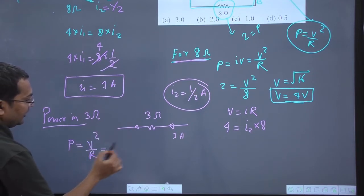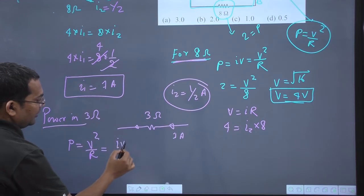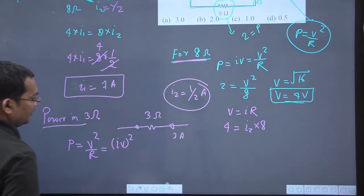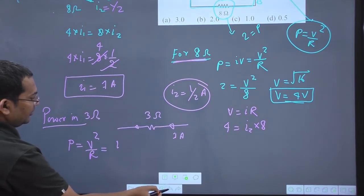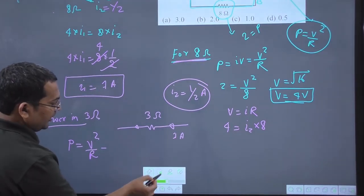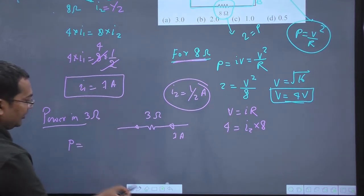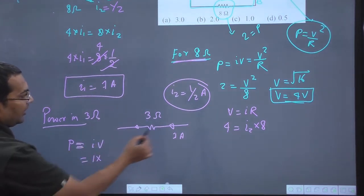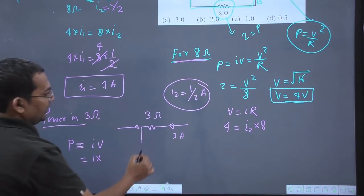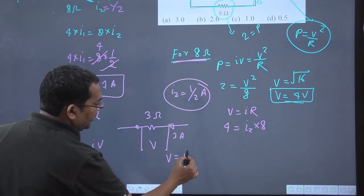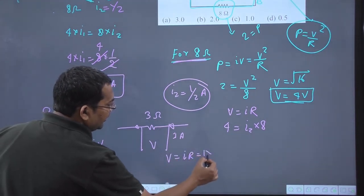The voltage V equals IR. Or I can directly apply it this way: power equals IV. The current is 1 ampere. Power equals IV, so I'll find the voltage across it.